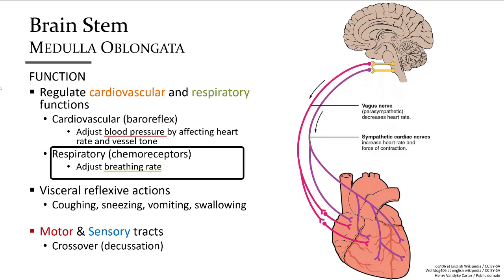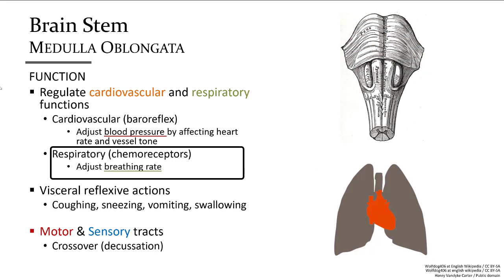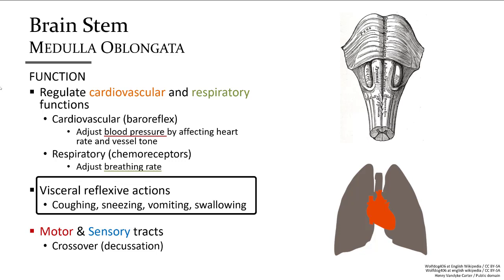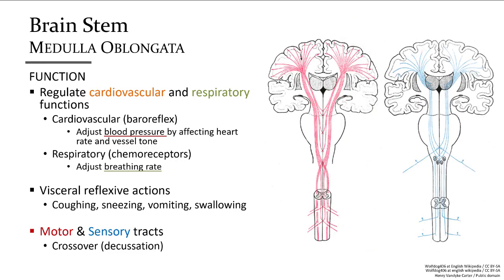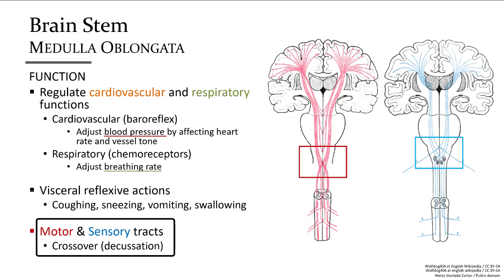Chemical sensors along arterial walls called chemoreceptors monitor oxygen and carbon dioxide levels in the blood; if these levels are out of range, the rate of respiration is adjusted. Basic reflexes of the digestive and respiratory systems — such as coughing, sneezing, vomiting, and swallowing — also come from this region. Motor and sensory nerve tracts cross over to the opposite side here, so one side of the brain controls and receives stimuli from the opposite side of the body.